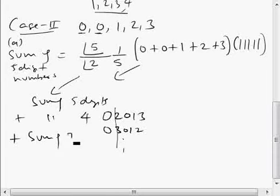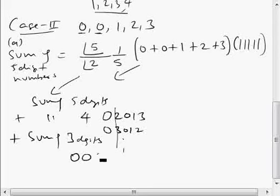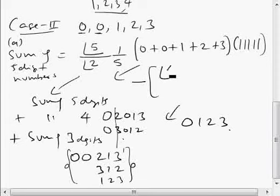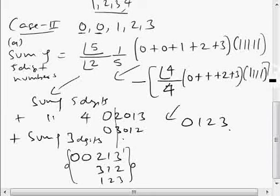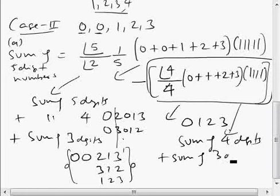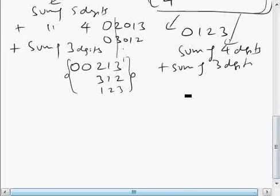Sum of three-digit numbers is also included because if both zeros are in the first two positions, we get arrangements like 0, 0, 1, 2, 3 — those are three-digit numbers. From this total we subtract the sum of four-digit numbers formable with one zero and 1, 2, 3: that's 4! total arrangements (treating zero as non-zero) divided by 4. But this subtracted term itself includes sum of four-digit plus sum of three-digit numbers, since zero can again appear at the front.